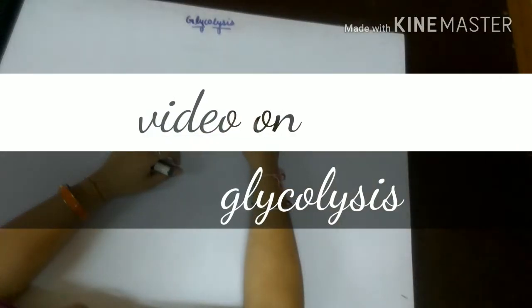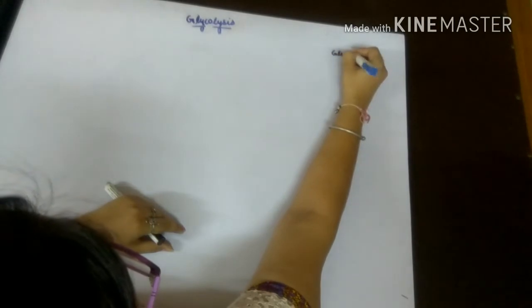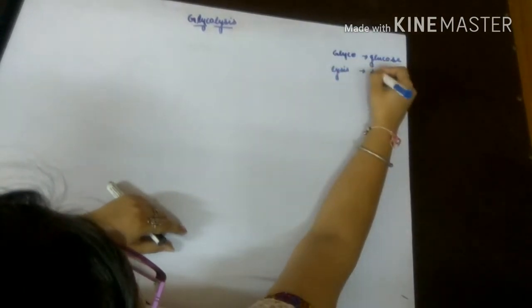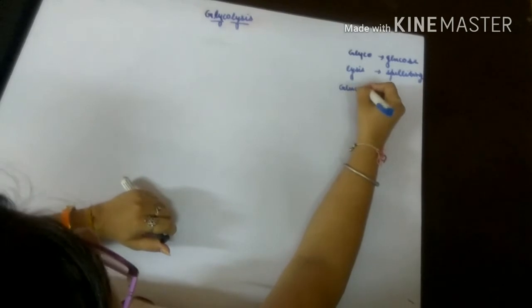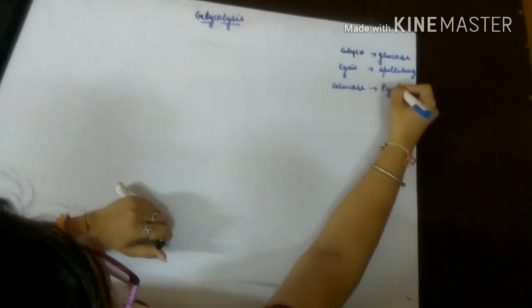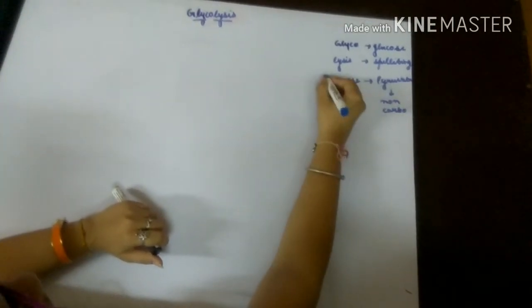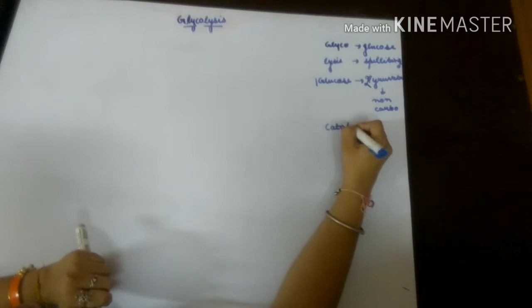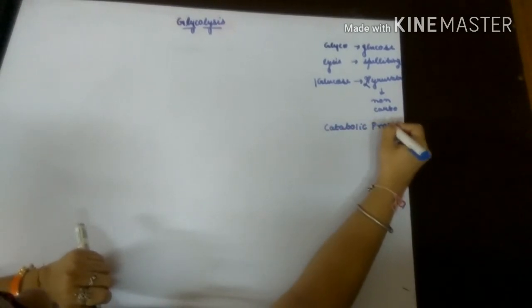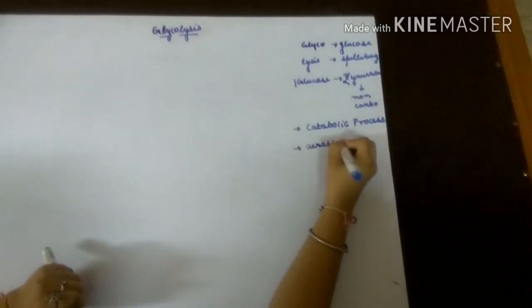Hello friends, today we came with a new video on the topic glycolysis. Glycolysis, in which glyco means glucose and lysis means splitting. This glucose, which is a carbohydrate source, is converted into pyruvate, which is a non-carbohydrate source. One molecule of glucose is converted into two molecules of pyruvate. It is a catabolic process.